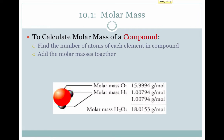Take water for example. The mass of oxygen is 15.994 grams, and each water molecule contains one oxygen atom, because the formula is H2O. The molar mass of hydrogen is 1.00794 grams per mole, and there are 2 hydrogens per water molecule, so we need that twice. Add them up and you get 18.0153 grams for every mole of water.